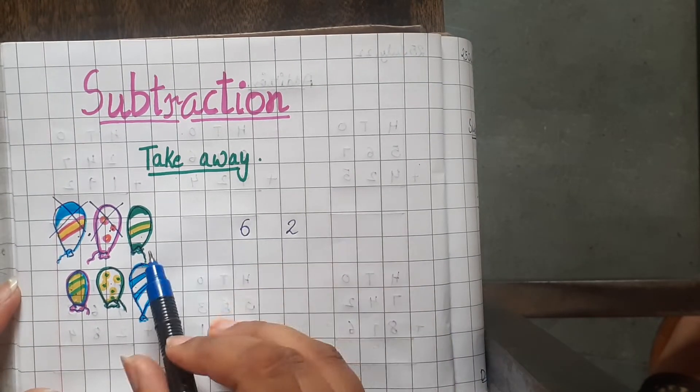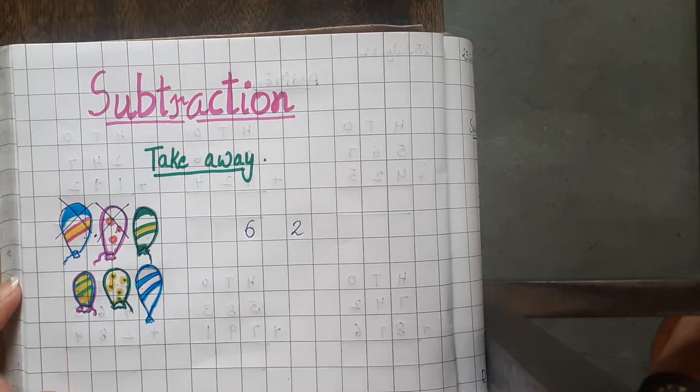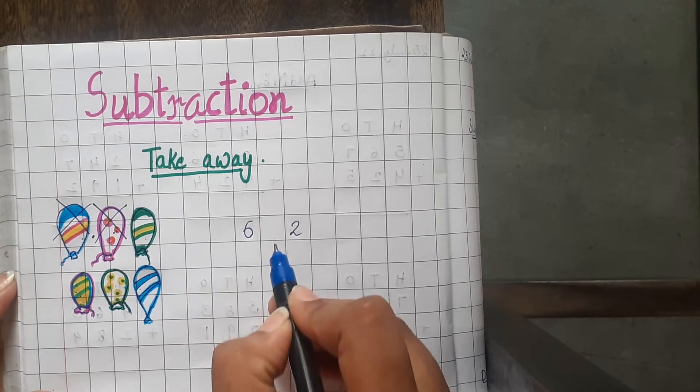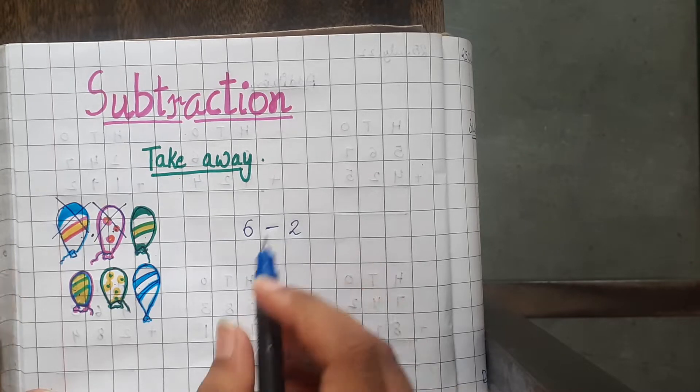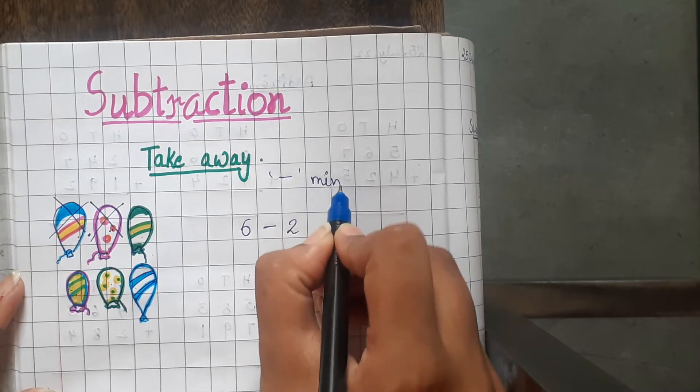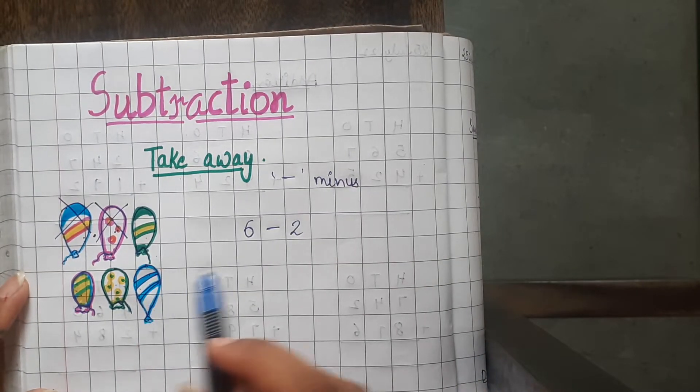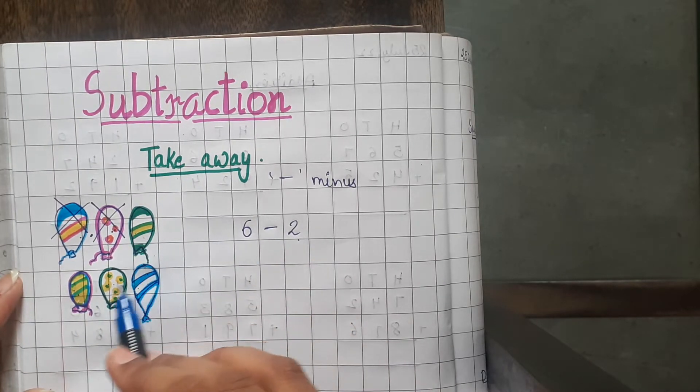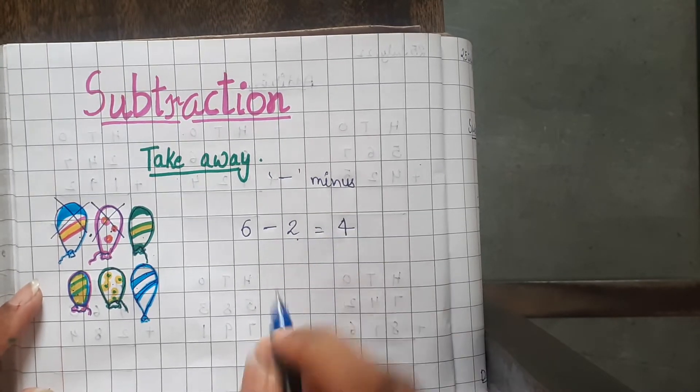So students, this is called subtraction. When we remove something, when we take away something, we call it subtraction. This symbol is called the minus symbol. This is the minus symbol and is used to show subtraction. Here we have 6 balloons and we took away 2. So 1, 2, 3, 4. 4 balloons are left with us.